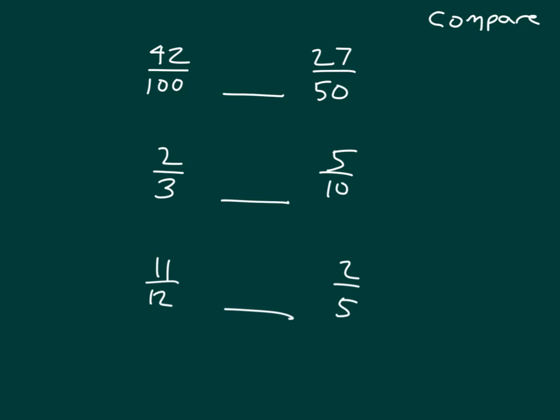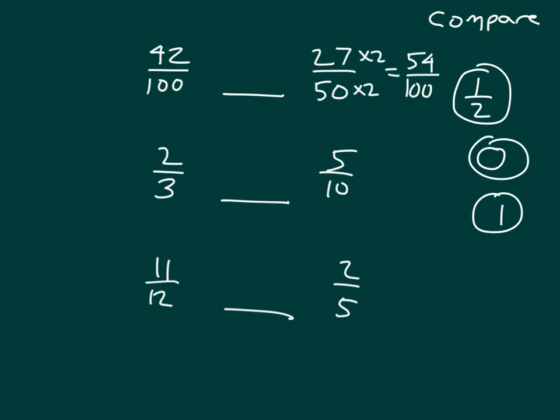Here we're asked to compare these, and we'll think about 1/2, we'll think about 0, we'll think about 1, and where it is that these would appear. If we notice that we can easily convert or change and write an equivalent fraction, then we will. So let's see, 50, we would multiply by 2 to be able to get 100. 27 doubled is 54, 50 doubled is 100. Well, I know that 42 hundredths is less than 1/2, 54 hundredths is more than 1/2, therefore, 42 hundredths is less than 54 hundredths. I also could have thought that 27 fiftieths is already bigger than 1/2, because 25 fiftieths does equal 1/2.